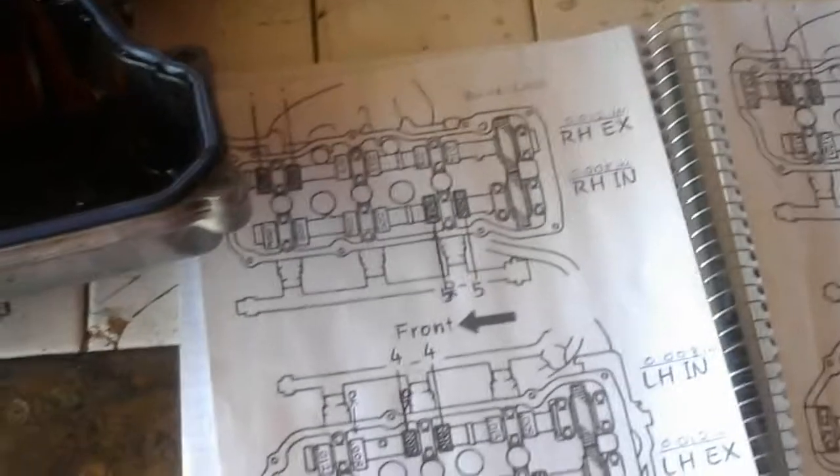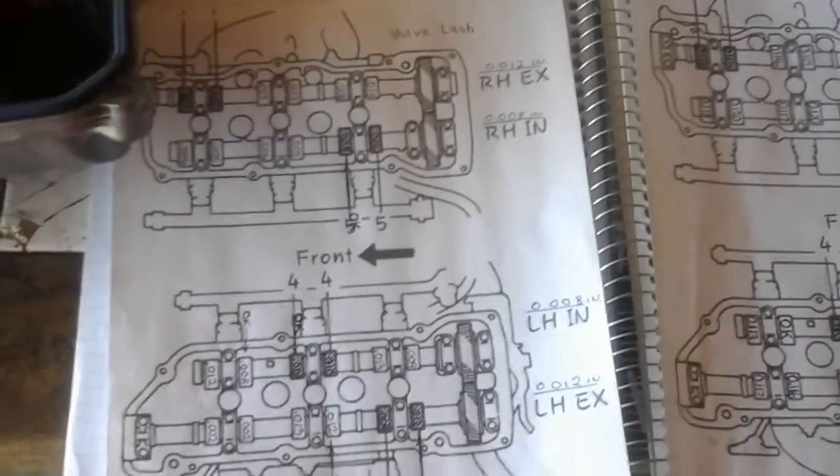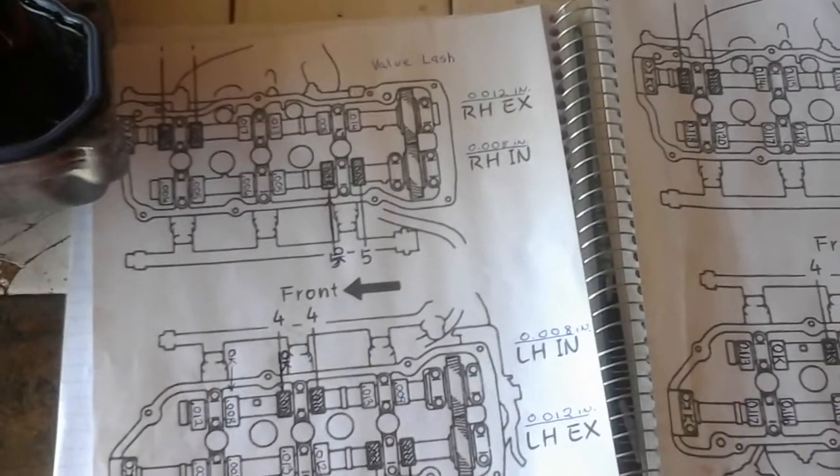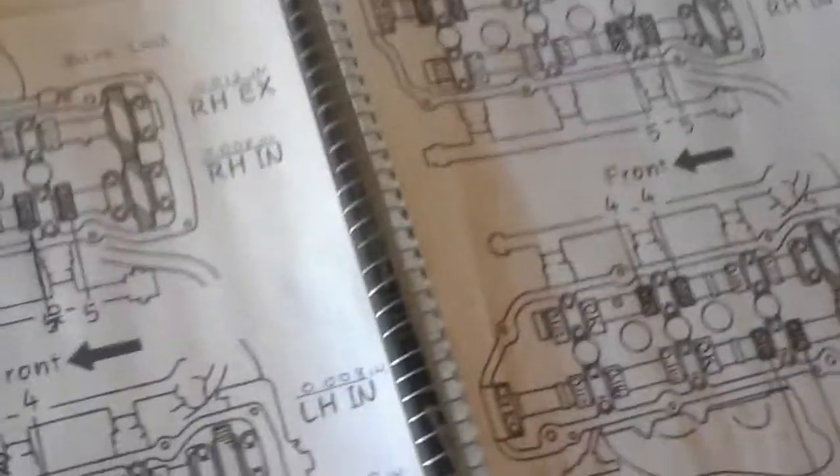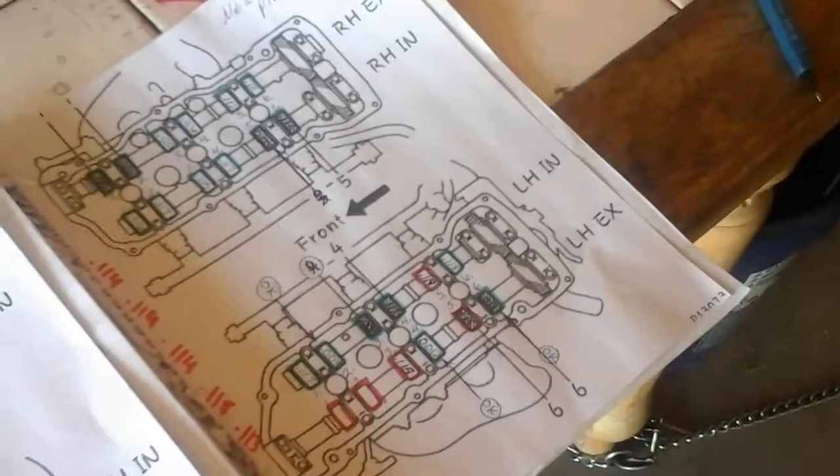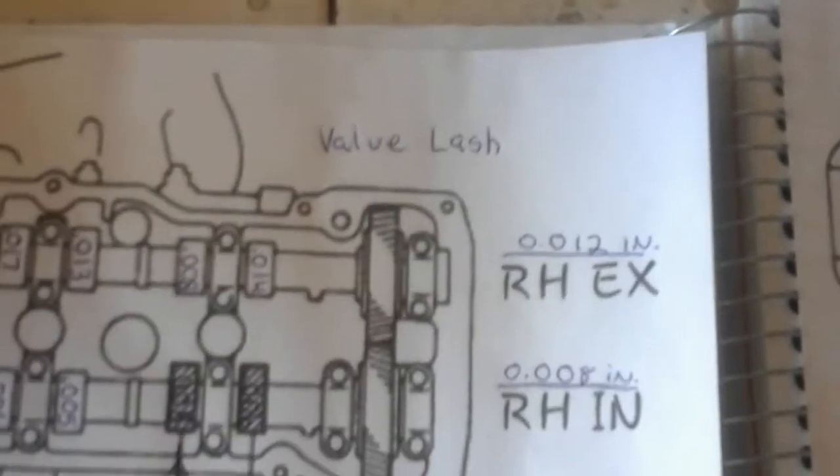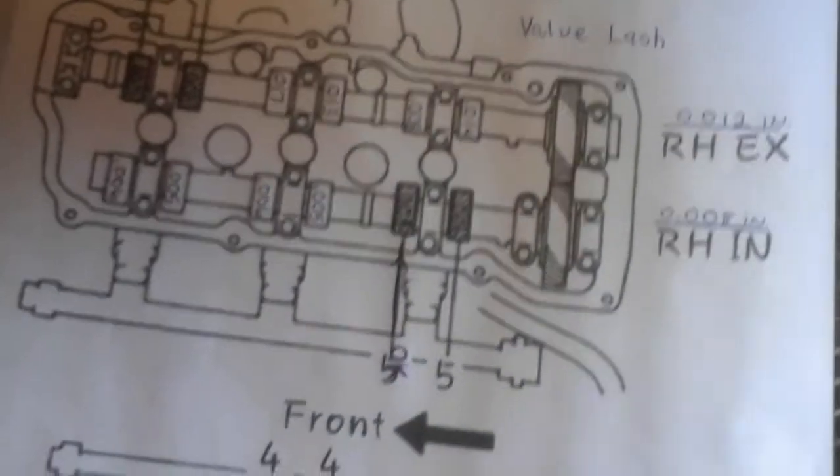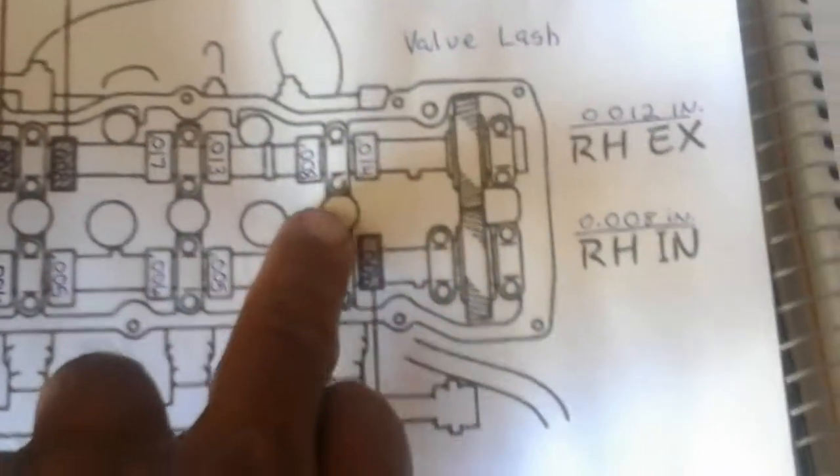Everything is pointed to the passenger side. I thought of using one of those drawings and doing a snap pic of it. My daughter somehow sent it to our printer and I printed up big versions of these so that I can write on them and keep track of what I'm doing. This one says valve lash, that means the valve clearance, the space between the cam and the actual shim.